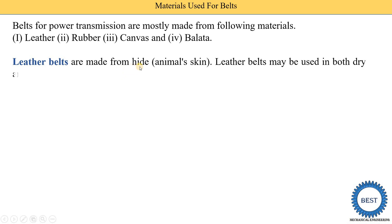Leather belts are made from hide. Hide means animal skin — the word comes from a German word meaning animal skin. Leather belts may be used in both dry as well as wet conditions, meaning where the atmospheric condition has less humidity or high humidity. In both cases, we can use the leather belt.